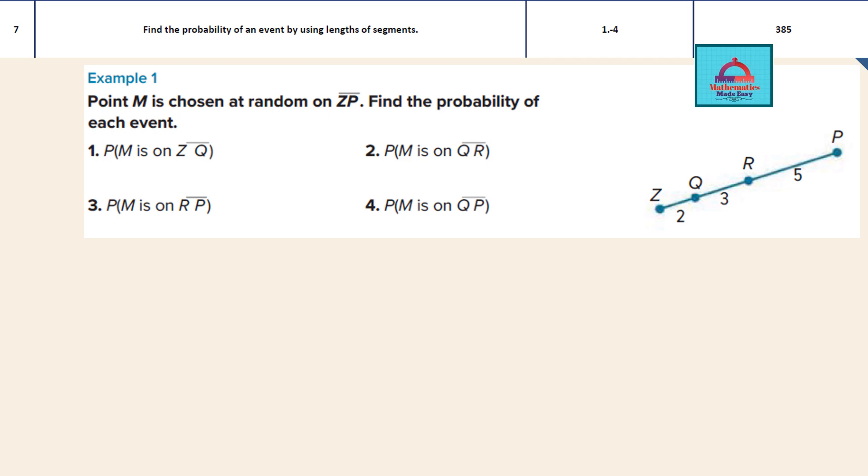Let's solve the below question which is on learning objective 7 where you have to find the probability of an event by using length of segments. Here we are going to solve questions 1 to 4 given on your math book on page 385, and if you remember these are the questions from the lesson geometric probability. In the lesson geometric probability you have done a formula called the length probability formula that will help to solve all of these questions.